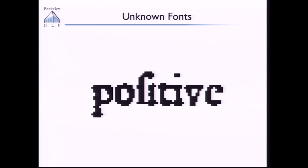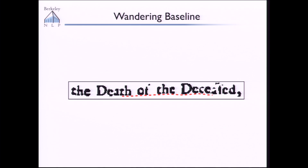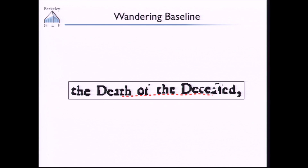Let me tell you the three primary reasons why historical documents are hard. The first is that the fonts in these documents are unknown — they're ancestors of modern fonts. For example, in this historical rendering of the word 'positive,' you can see the use of the long S glyph, which we don't even have a representation for in modern fonts. A second problem is that the baseline of the text wanders up and down as you move across lines. This has to do with how the documents were printed on the historical printing press — that's a mechanical process with some slop, and you end up with these wandering baselines.